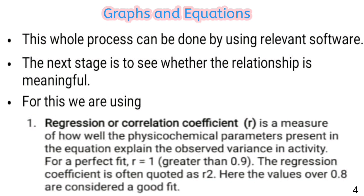The next stage is to assess whether the relationship is meaningful, using three parameters. First, the regression or correlation coefficient r: it measures how well the physico-chemical parameters explain the observed variance in activity. For a perfect fit r should be 1, but in practice r should be greater than 0.9 to be acceptable. r² values over 0.8 indicate a good fit; multiplying r² by 100 gives the percentage variation in biological activity explained — for example, r² = 0.85 means 85% of variation is explained.